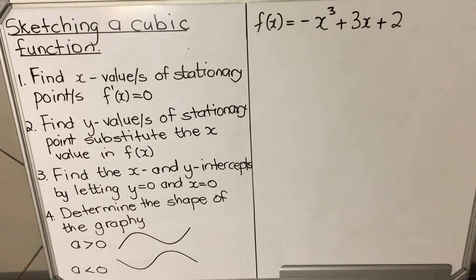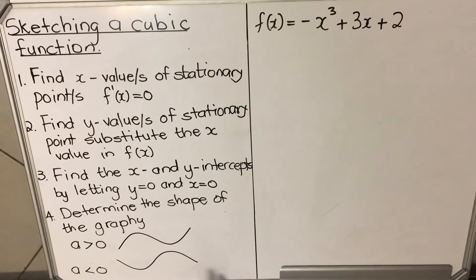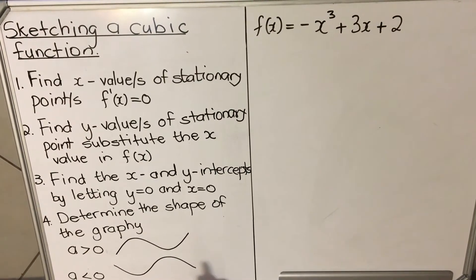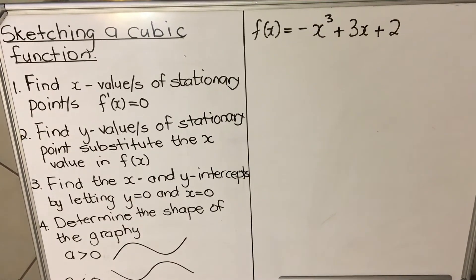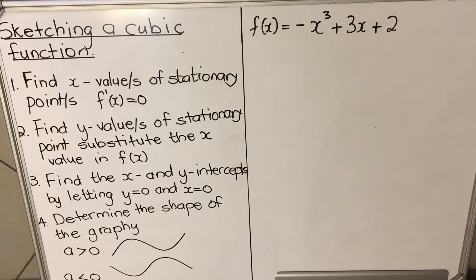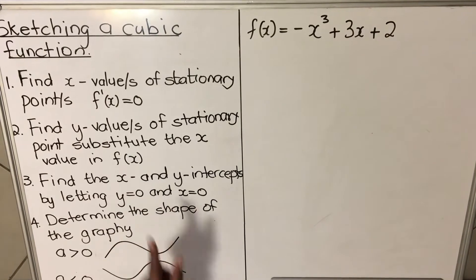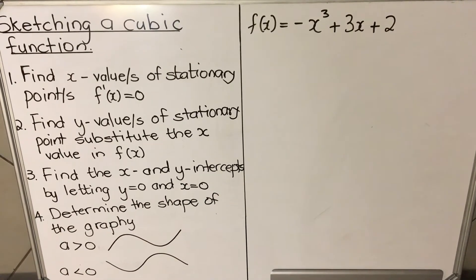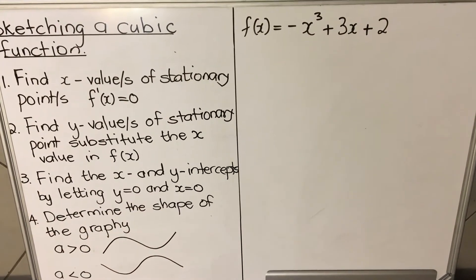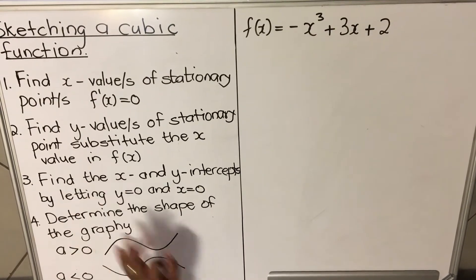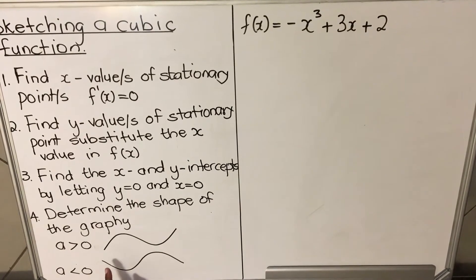In this lesson I'm going to show you how to sketch a cubic function. There are four steps to follow. First, find the x-value of the stationary point by finding the derivative, equating it to zero, and solving for x. Second, substitute those values into the original equation to find the y-coordinate of the turning point. Third, find the y and x-intercepts by letting y be zero for the x-intercept and letting x be zero for the y-intercept.